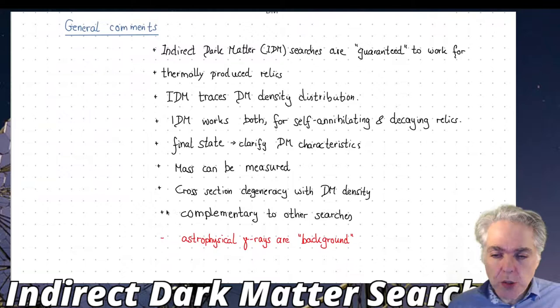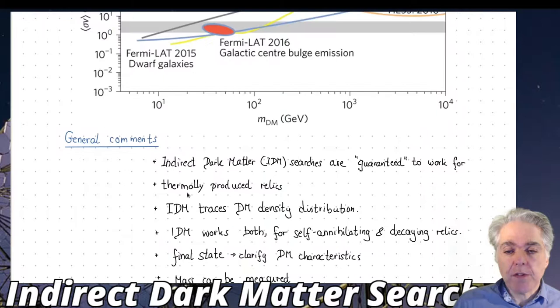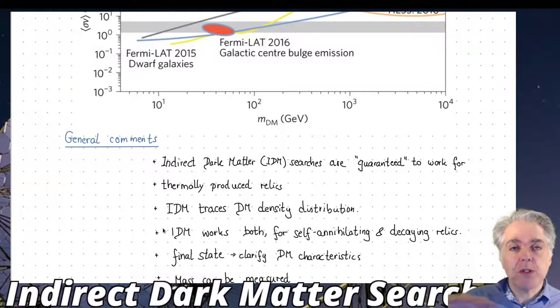Let me finish with a couple of comments. Indirect dark matter searches are guaranteed because this is a process which was at work to produce these particles thermally, so this would be in a self-consistent way expected. The observations of indirect dark matter searches are sensitive to the density distribution for the dark matter particles. In turn, if you were to observe any kind of signal, this would be fantastic, you'd be able to measure the distribution of dark matter in the universe.